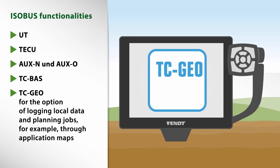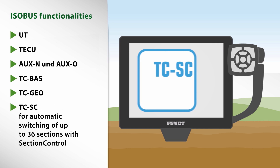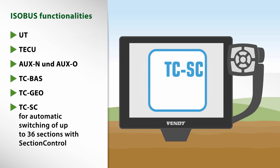TCGO for the option of logging location-specific data and planning jobs, for example through application maps. TCSC for automatic control of up to 36 sections with section control.